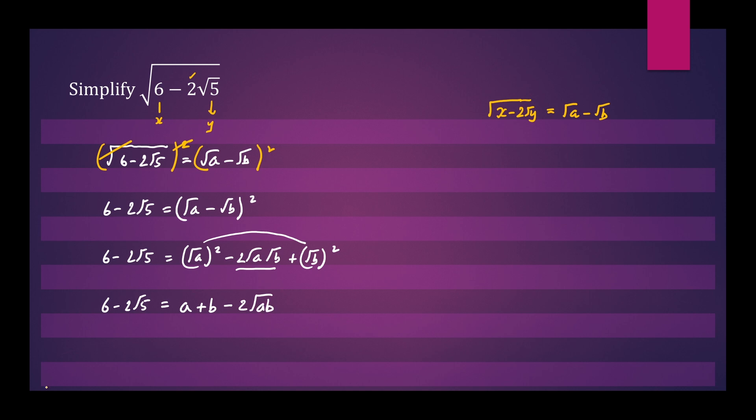So let's match our numbers. We have root ab here and we have root 5 here, so the ab will be equal to 5. And we see we have a plus b, and this will be equal to 6.